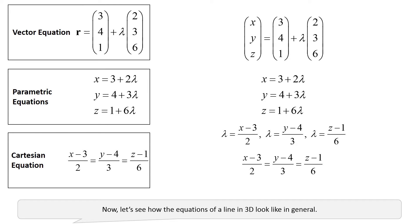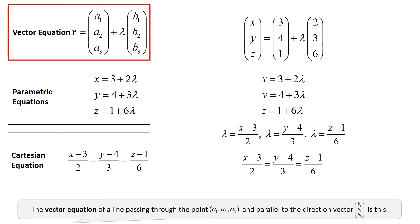Now, let's see how the equations of a line in 3D look like in general. The vector equation of a line passing through the point a1, a2, a3, and parallel to the direction vector b1, b2, b3, is this.